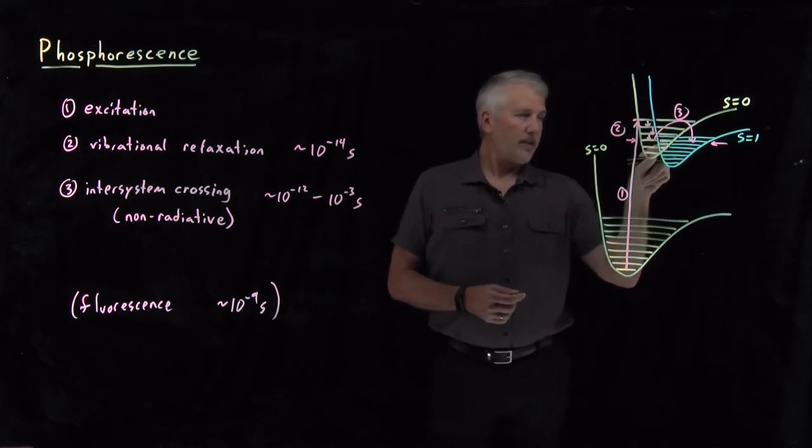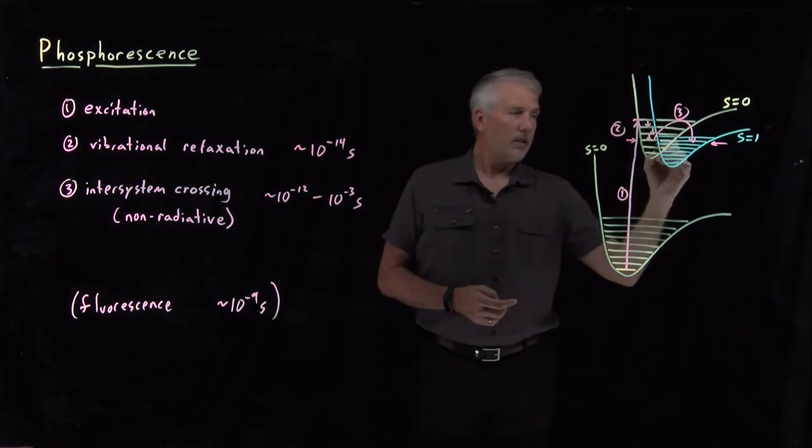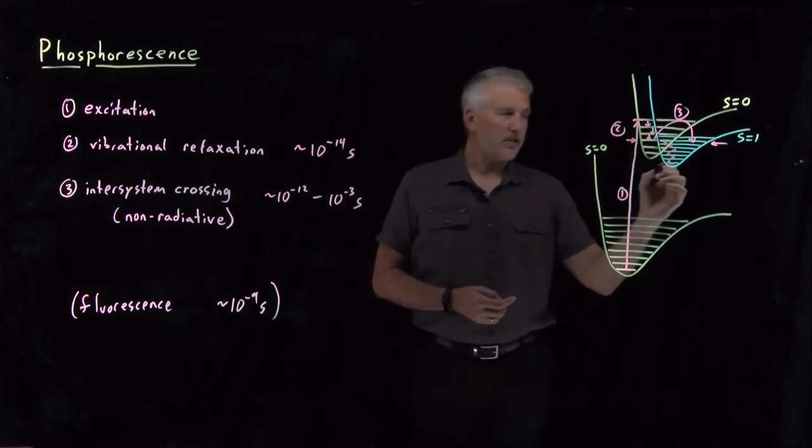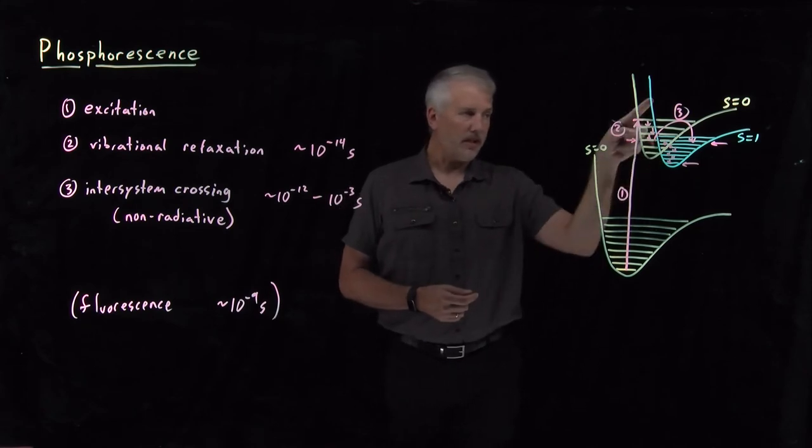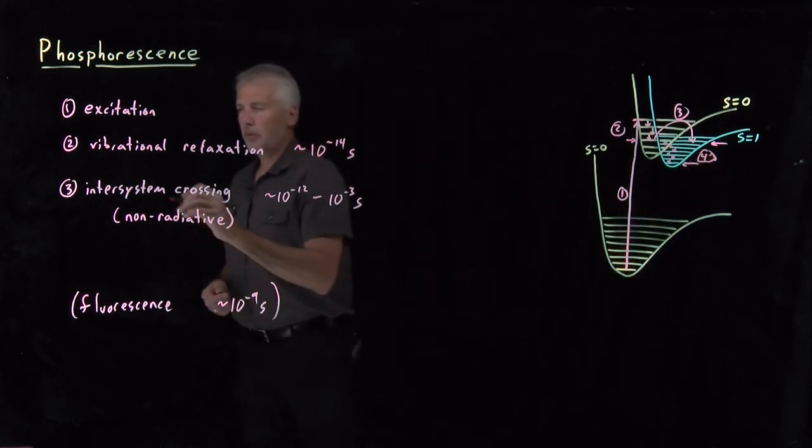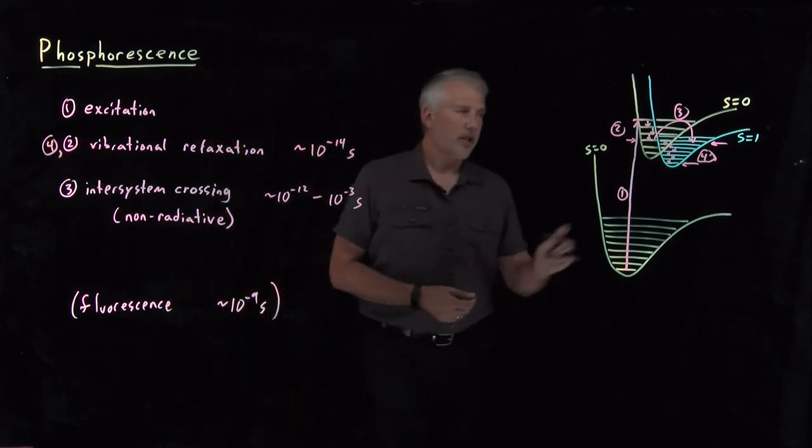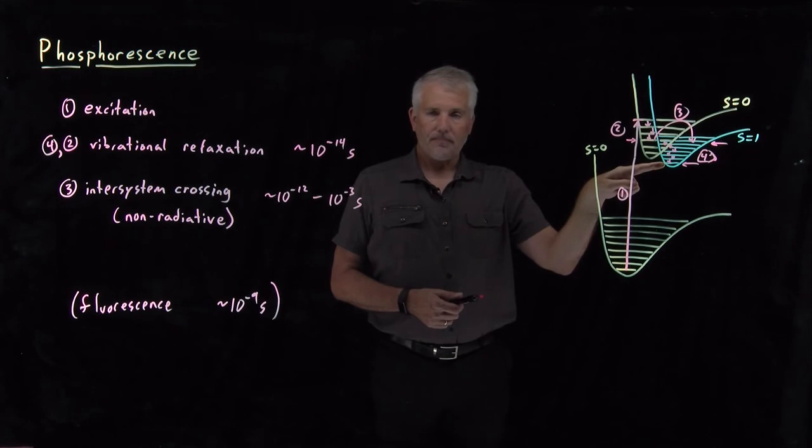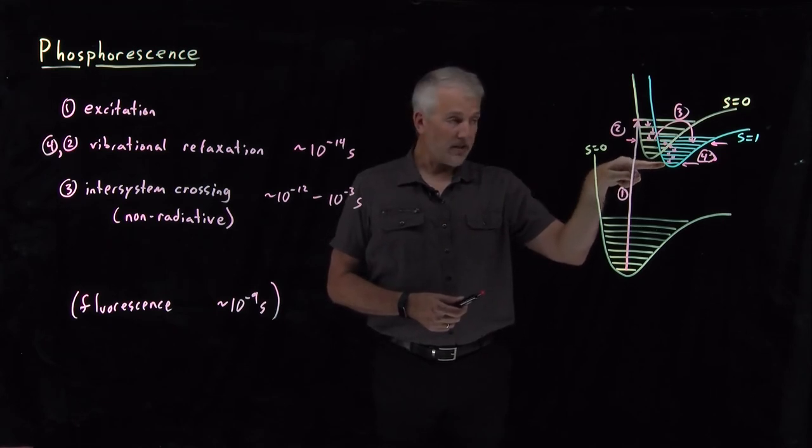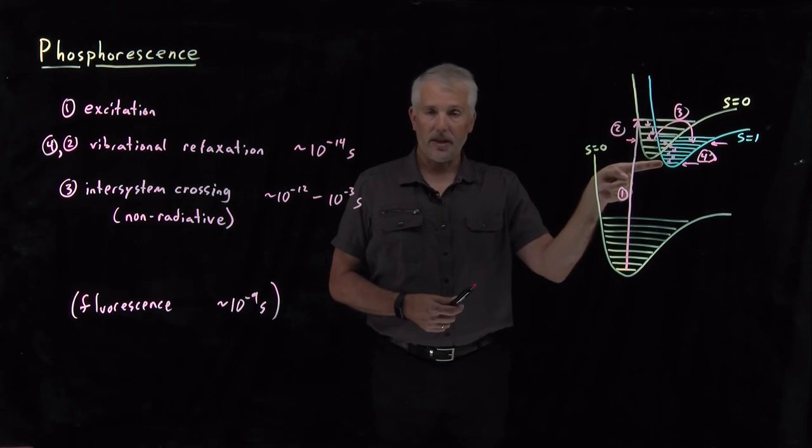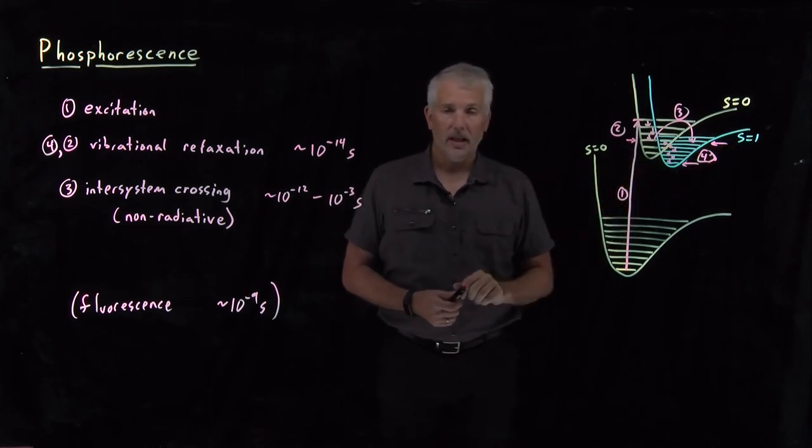Once you're in this blue triplet electronic surface, the molecule can then vibrationally relax in the triplet surface, landing itself at the ground vibrational state in the electronically excited triplet state. Vibrational relaxation happens very rapidly after a few bond vibrations, ending up in the ground vibrational state up here. And now what does the molecule do? It looks like it's stuck. There's no way to decrease its energy other than going down to this singlet electronic state, but it can't get there by emitting light because that would violate the selection rules. So it hangs out there up in the ground vibrational state of this triplet electronic state because it can't do anything else.